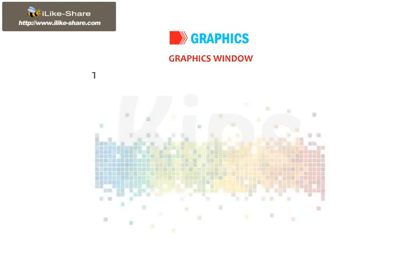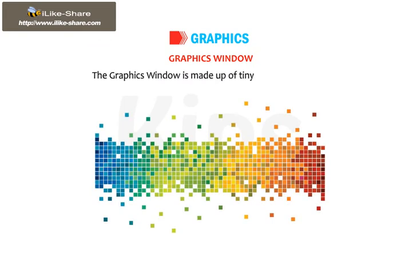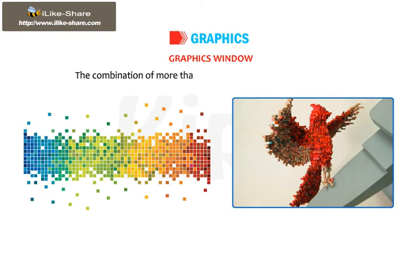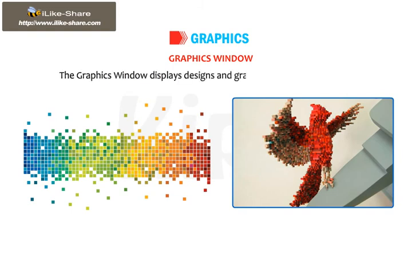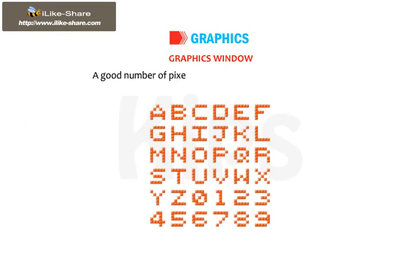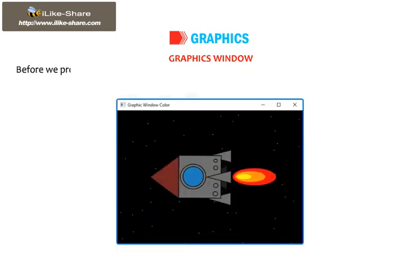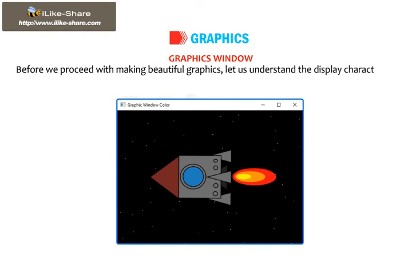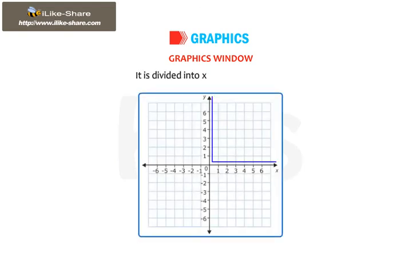The Graphics Window is made up of tiny dots called pixels. The combination of more than one pixel together makes an image. The Graphics Window displays designs and graphic patterns on the screen. A good number of pixels assures better display of graphics. Before we proceed with making beautiful graphics, let us understand the display characteristics of the Graphics Window.